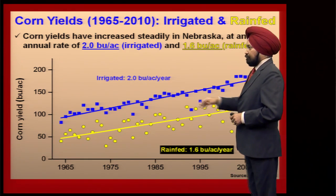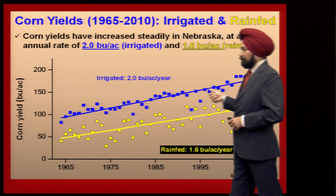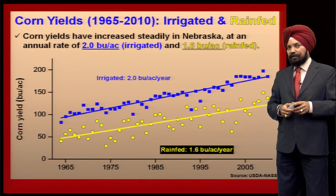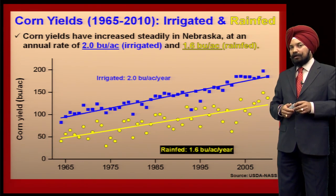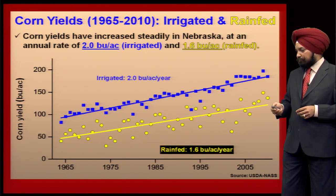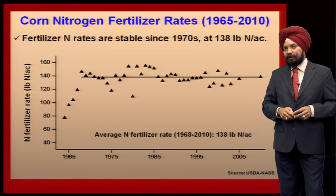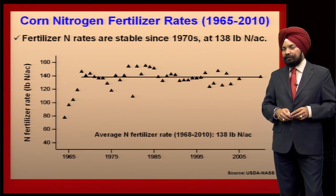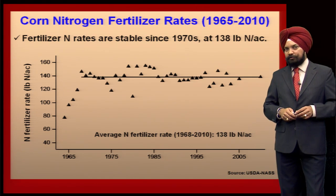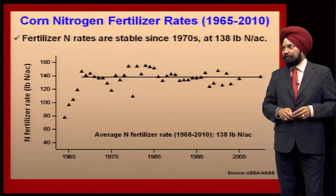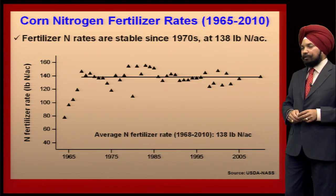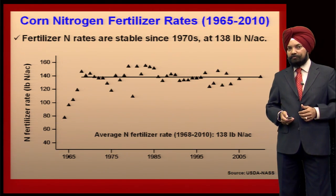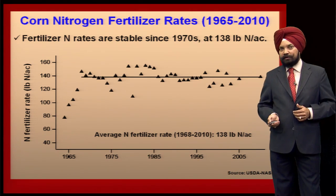On the rain-fed side, farmers were achieving around 50 bushels per acre and now they are achieving around 100 plus bushels per acre. So over time there is an annual increase rate and this increase has happened linearly. Looking at nitrogen fertilizer use during the same time frame, it is surprising that from 1968 onward nitrogen fertilizer rates are quite stable, with an average rate of 138 pounds of nitrogen per acre. This means farmers have increased corn yield over time without any significant increase in nitrogen fertilizer rates.